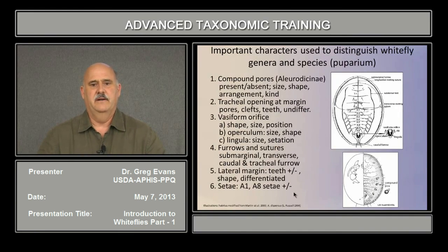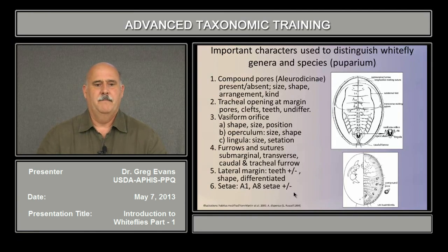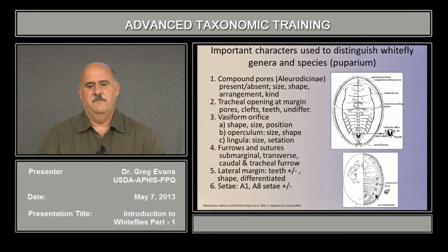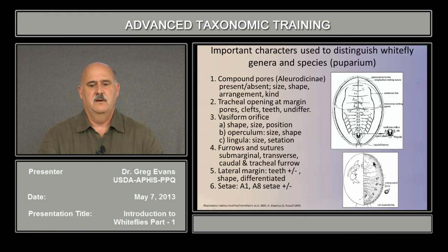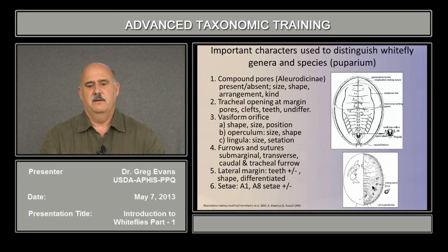Some important characters that are used to distinguish white fly genera — all these are based on the puparium, or the fourth stage instar nymph. Compound pores are present in the subfamily Aleurodicinae. Most of them are along the abdominal margin here, but there is one pair on the cephalus. Their presence or absence, size, shape, and arrangement is important when you get down to the generic and species level.